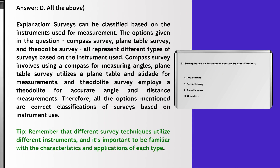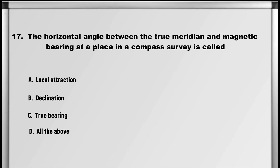Moving on to question number 17: The horizontal angle between the true meridian and magnetic bearing at a place in a compass survey is called: A. Local attraction, B. Declination, C. True bearing, D. All the above. Answer: B. Declination.